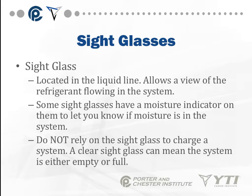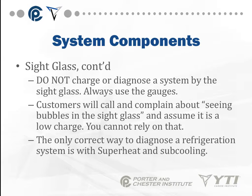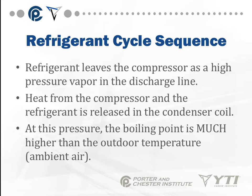Sight glasses are located in the liquid line and allow a view of the refrigerant flowing in the system. The important thing to remember is that sight glasses are primarily there as a moisture indicator. Do not rely on a sight glass to charge a system — a clear sight glass can mean the system is either empty or full, because refrigerant has no color; it looks like water. Also, bubbles in a sight glass don't necessarily mean the system is empty or partially charged. Always use your gauges.